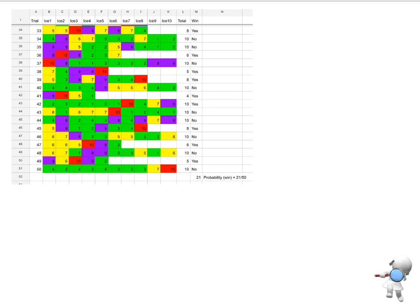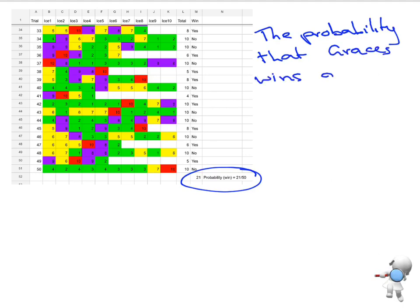The other part of it is looking at that probability of winning because that was the second investigation question. So I just want to write myself a little note here. The probability that Grace wins a movie ticket is 21 out of 50.